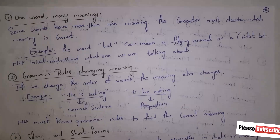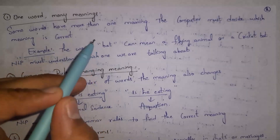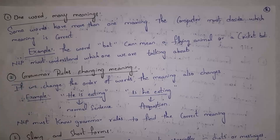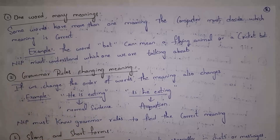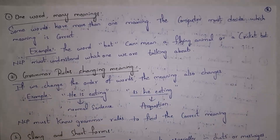The first challenge is one word with many meanings. Some words have more than one meaning, so the computer needs to decide which meaning is correct. For example, the word 'bat' can mean an animal bat or a cricket bat — NLP needs to understand which one we are talking about based on the sentence. The second challenge is grammar rules changing meaning. If we change the order of words, the meaning also changes. For example, 'he is eating' is a statement, but 'is he eating?' is a question. So NLP needs to understand grammar rules to find the correct meaning.